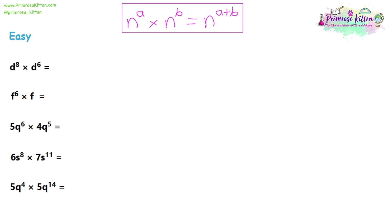So using that for question one, we've got the base number D on both sides, so we're going to write down D. Then we've got the two powers: a power of 8 and a power of 6. Now we're multiplying, so we're going to add the powers. 8 plus 6 is 14. The answer is D to the power of 14.